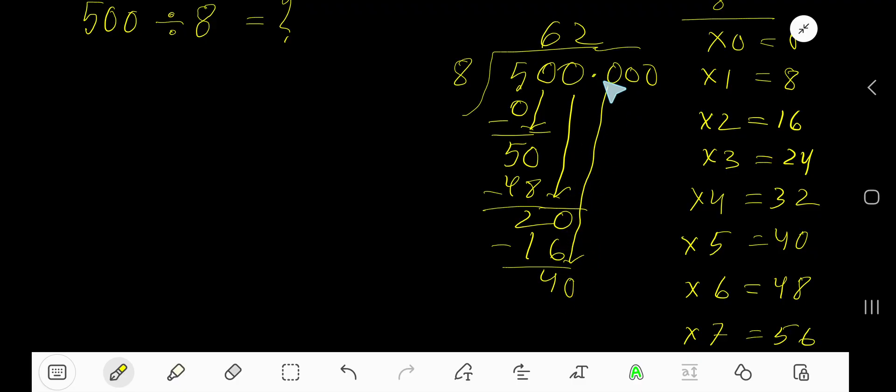8 goes into 40 how many times? It goes in 5 times. 5 times 8 equals 40. Subtract to get 0. As our remainder is 0, we are done. So 62.5 is our answer.